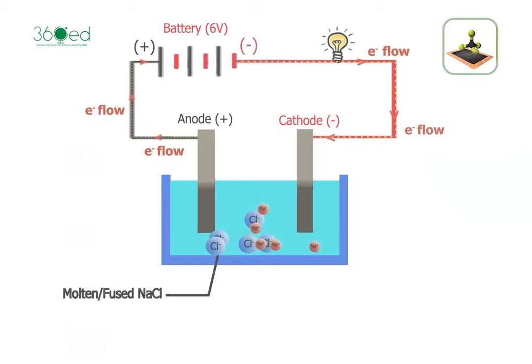The apparatus is set up as shown in the figure. When electricity passes through the molten sodium chloride, sodium ions move to the cathode, the negative electrode.